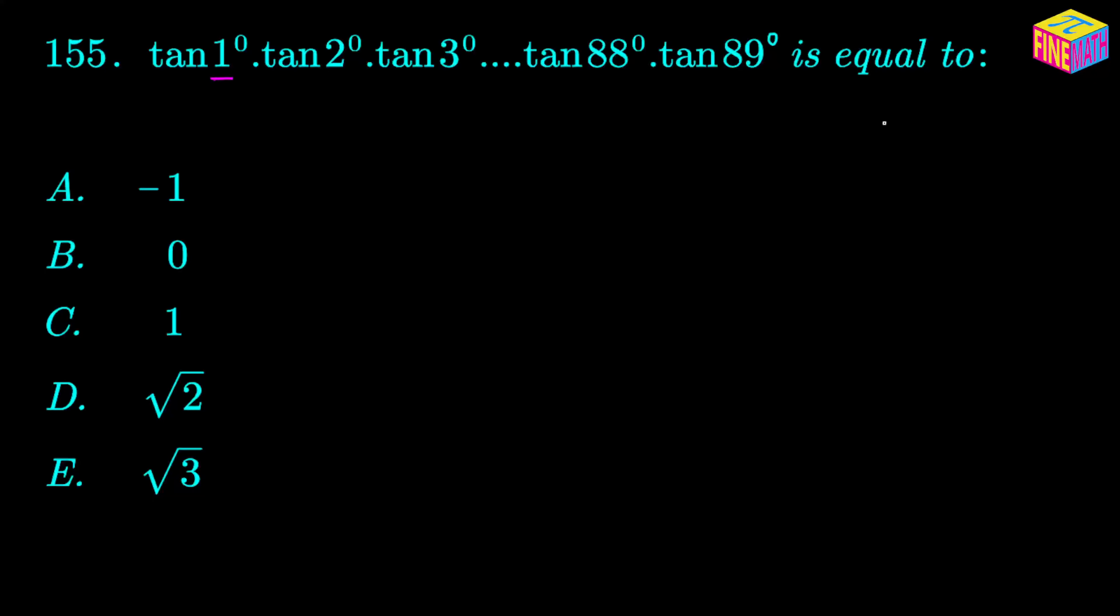Similarly, if you look at 2 degrees and 88 degrees, their sum is also 90 degrees. So there is probably something we can do about this entire product and convert it into nice pairs like these, and that might help us simplify the situation.